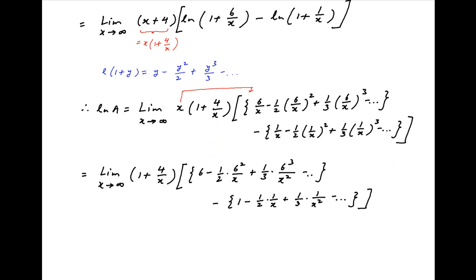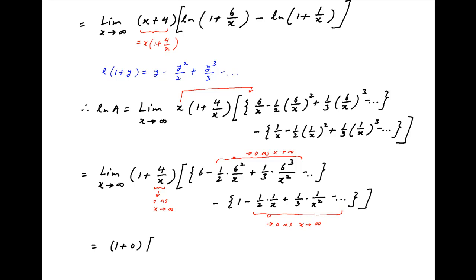Now note that as x tends to infinity, 4 upon x tends to 0, and inside the square brackets all terms involving x tend to 0 as x tends to infinity. Therefore, ln a equals (1 plus 0) multiplied by (6 minus 0 minus 1 minus 0).